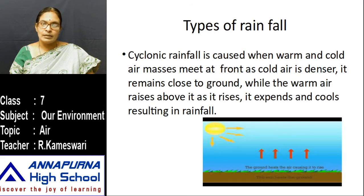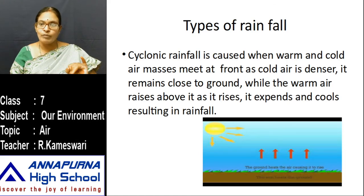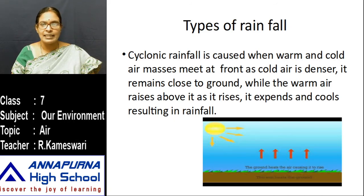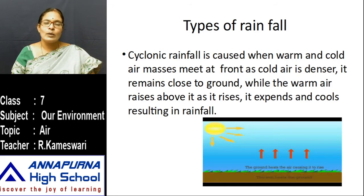Rain is one form of precipitation and is the main source of water for us. Rainfall is divided into three types: cyclonic rainfall, orographic or relief rainfall, and conventional rainfall. Cyclonic rainfall is caused when warm and cold air masses meet at a front. Cold air, being denser, remains close to the ground, while the warm air rises above, expands and cools, resulting in rainfall.